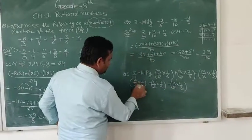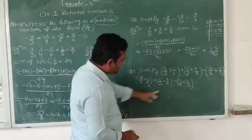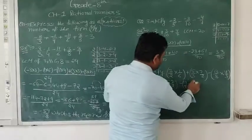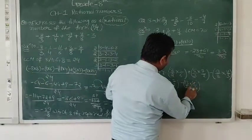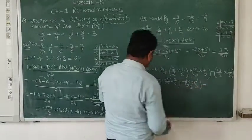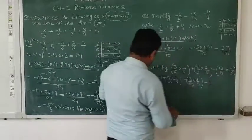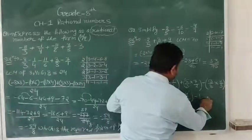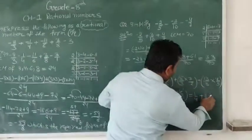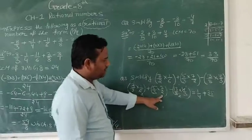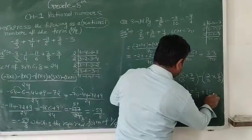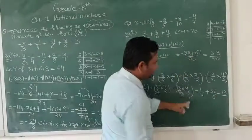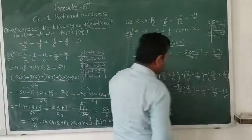We first handle the multiplication. For 3 upon 2 times 1 upon 6: 3 times 1 = 3 and 2 times 6 = 12, which simplifies to 1 upon 4. For 5 upon 3 times 7 upon 2: 5 and 7 do not cancel with 3 and 2, so 5 times 7 = 35 and 3 times 2 = 6. For 18 upon 8 times 4 upon 3: 18 and 3 cancel to give 6 and 1; 4 and 8 cancel to give 1 and 2. So 6 times 1 = 6 and 1 times 2 = 2, giving 30 upon 6. We now have 1 upon 4, plus 35 upon 6, minus 30 upon 6.